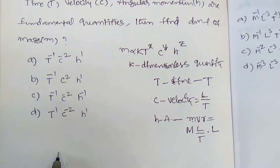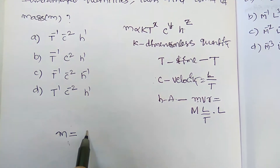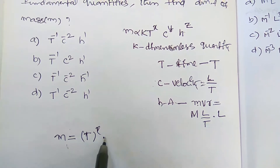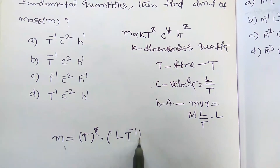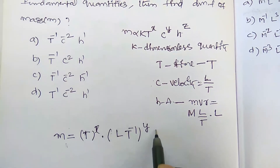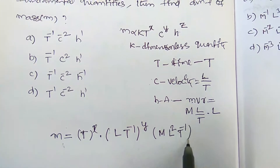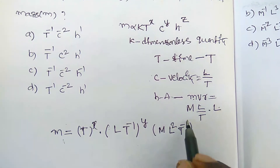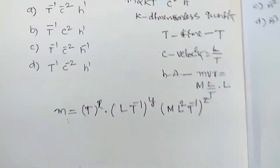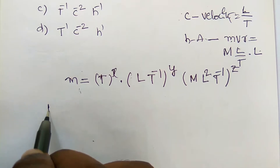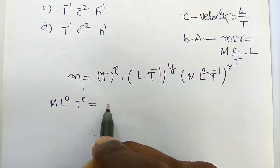Velocity c stands for velocity, so the dimension of velocity is L·T⁻¹ (distance divided by time). Angular momentum h: its dimension is m·v·r = M · (L/T) · L = M·L²·T⁻¹. These are the dimensions of the three physical quantities. Now let us substitute and solve.